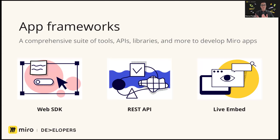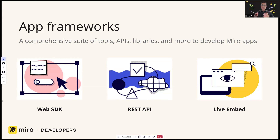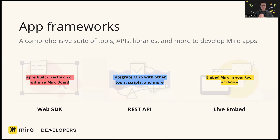Now let's talk about the main components of the Miro developer platform. First, we have the Web SDK, which we'll cover in more detail. Next, we have the REST API — very familiar to developers — with endpoints for backend-related work: gathering analytics like how many users your boards have, changing permissions, or automating board creation. And last, we have our live embed feature, which allows you to embed a Miro board directly into another tool — a very fun way to take Miro somewhere else.